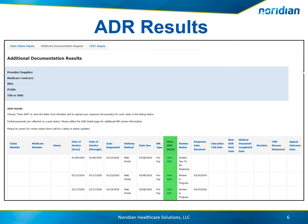Additional result columns include the due date, the MR type, the review status, the response date received, the education call date, the new ADR sent date, medical document completed date, the decision, and the appeal outcome date.